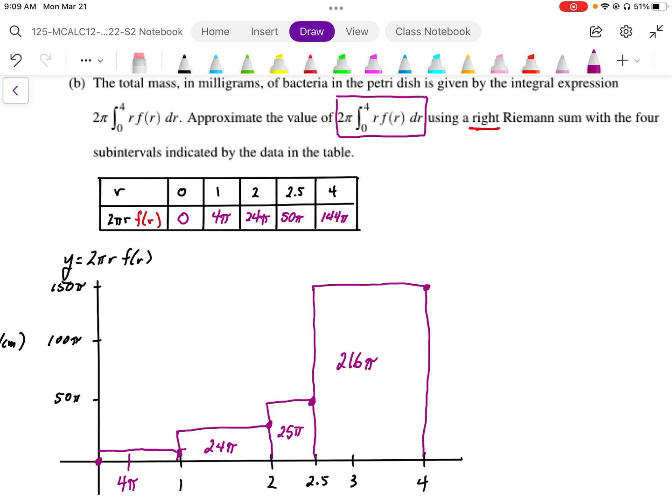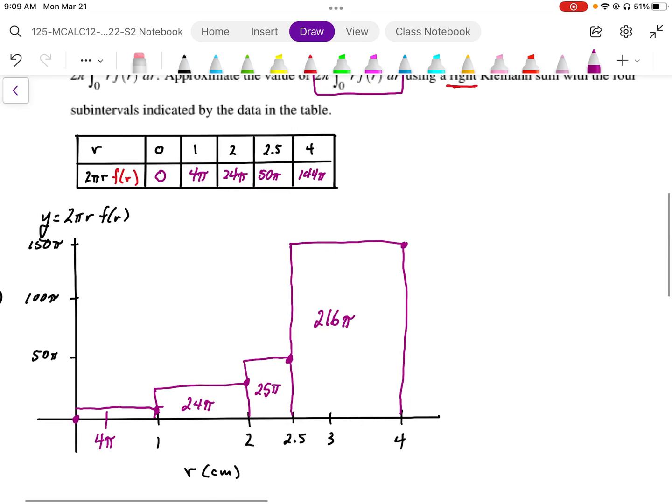We're going to add this all up. Our total area is going to work out to be 4 plus 24 plus 25, that's 53.